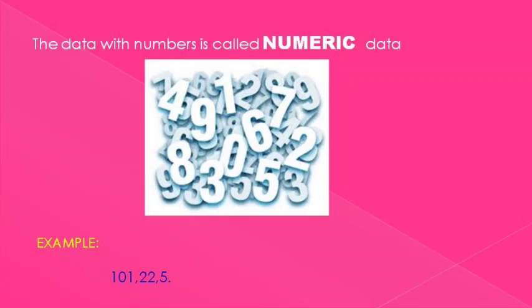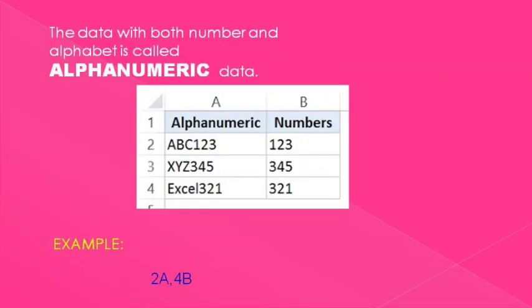The data with both number and alphabet is called alphanumeric data. So the combination of both the number and alphabet is called alphanumeric data type. Here are some examples for alphanumeric data type: 2A and 4B.